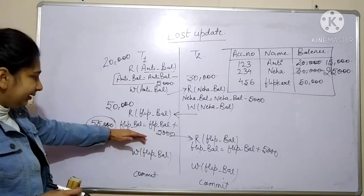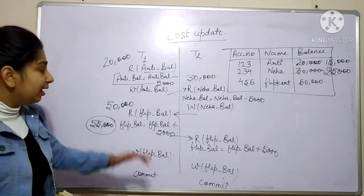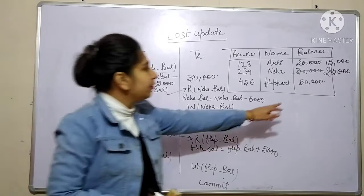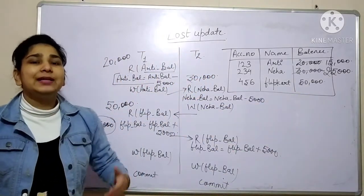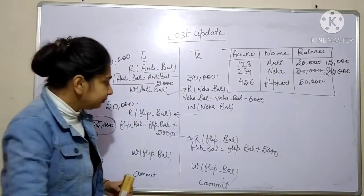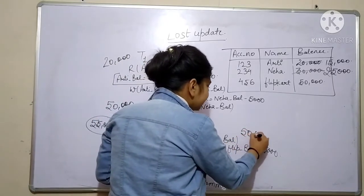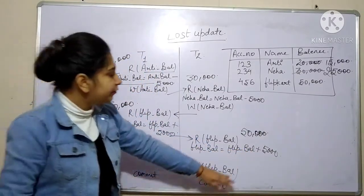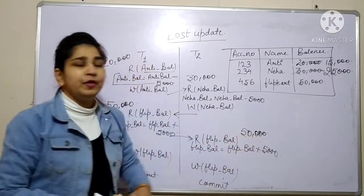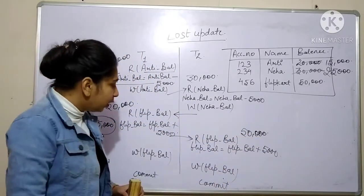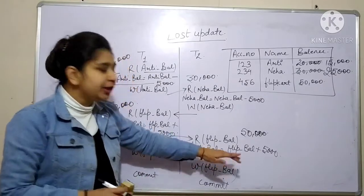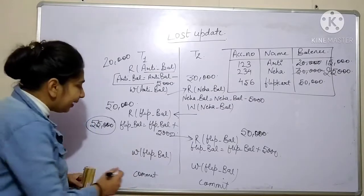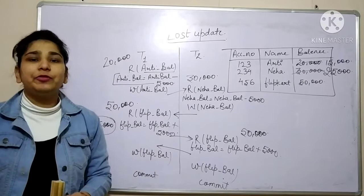In this transaction we added 5,000 rupees, but since we didn't perform the write operation yet, the database still has 50,000. So T2 fetches the value 50,000. After performing this operation in the main memory, the timer runs out and we switch from T2 back to T1.